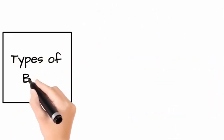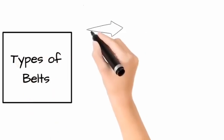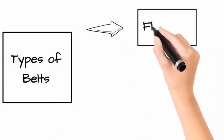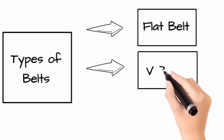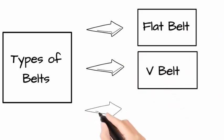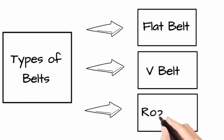Types of belts. 1. Flat belt. 2. V belt. 3. Rope belt.